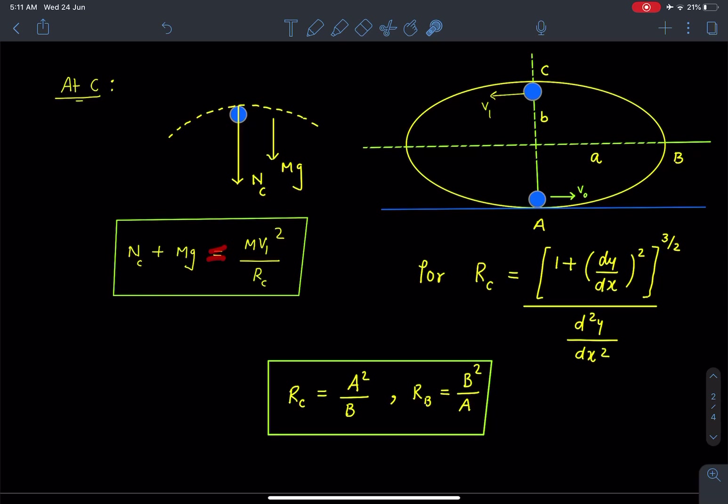So we can say that Nᴄ + Mg, this is the net centripetal force which is present at this point, and that is equal to mass into acceleration at point C. For this ball, it will be speed squared divided by Rᴄ.